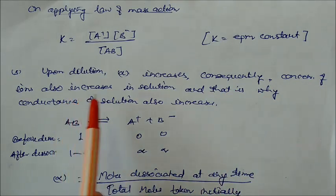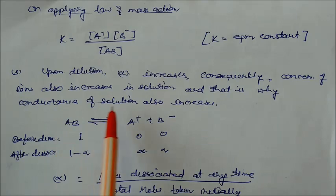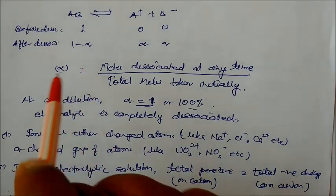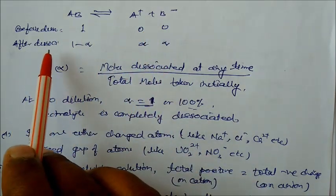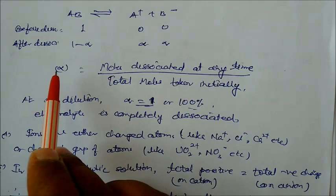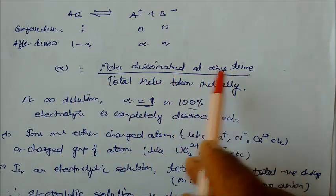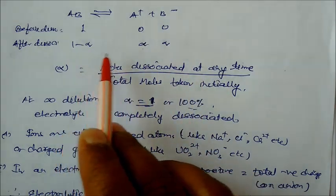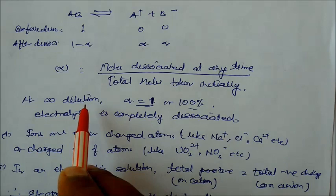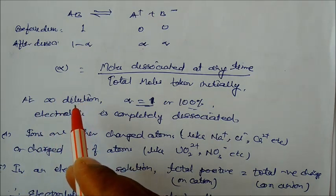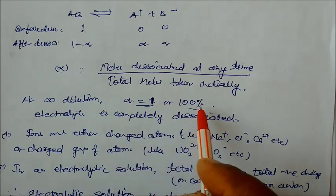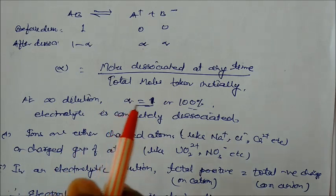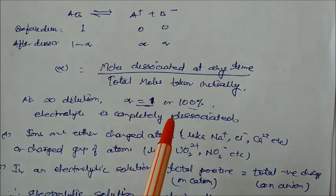As alpha increases upon dilution, the concentration of ions also increases, and consequently the conductance of the solution also increases. For the dissociation AB ⇌ A⁺ + B⁻, before dissociation the amounts are: AB = 1, A⁺ = 0, B⁻ = 0. After dissociation: AB = (1 − α), A⁺ = α, B⁻ = α. The degree of dissociation alpha equals moles dissociated divided by total moles taken initially. At infinite dilution, alpha equals 1, meaning 100% dissociation has taken place — for example, acetic acid is completely dissociated at infinite dilution.